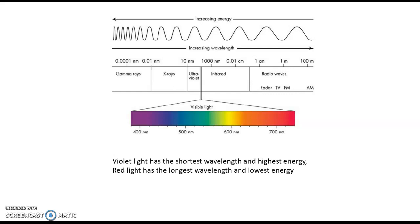Outside of visible light, we have ultraviolet light, which has even shorter wavelengths than violet and even higher energy, then X-rays — shorter still with even more energy — and gamma rays. On the other end, with longer wavelengths than red, we have infrared, which has lower energy, and then radio waves, the longest and the least energetic.